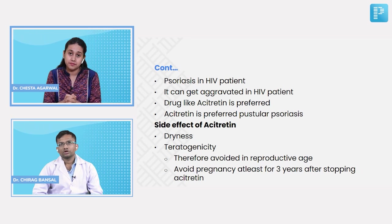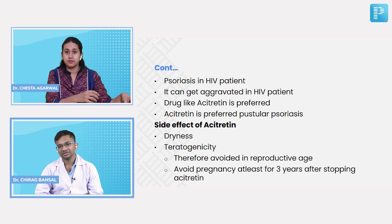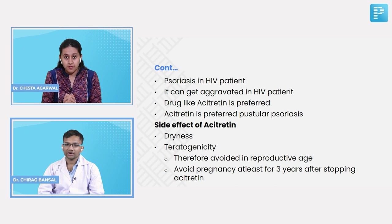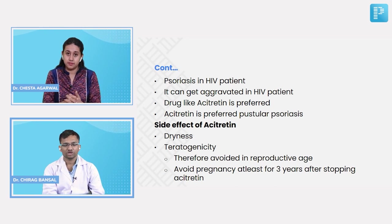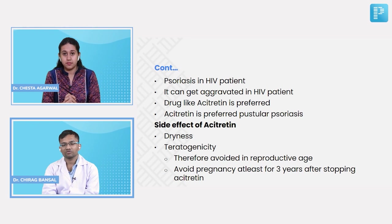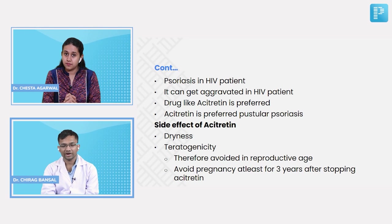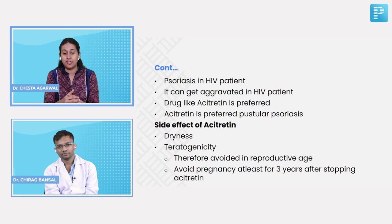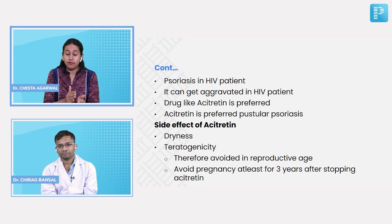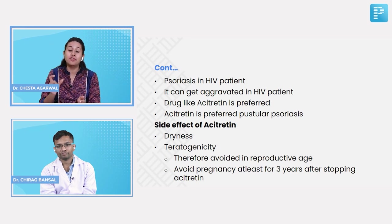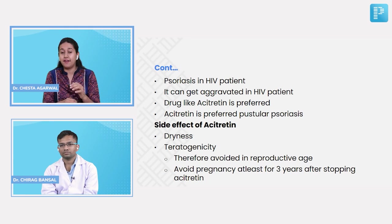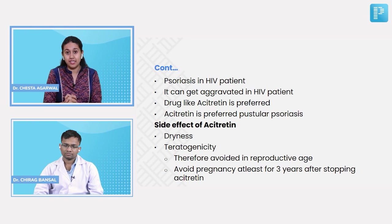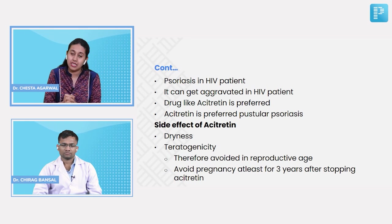The most common side effect of acitretin is dryness; it is also associated with teratogenicity. Before starting the drug in a female patient, rule out pregnancy. As a precautionary measure, the patient must use strict contraception for 3 years after stopping the drug, because acitretin is a fat-soluble drug that remains in the body for 3 years.